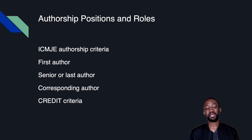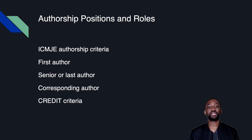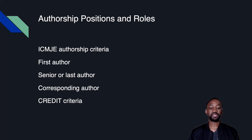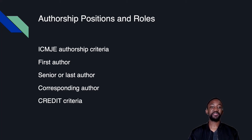There is an understanding that if you are the first author on a paper, you have contributed most significantly — it is almost your brainchild. This matters because when citing a paper, you generally cite the first person's name followed by 'et al.,' meaning 'and collaborators.' Now, regarding authorship roles, there are different ways one can contribute to research.